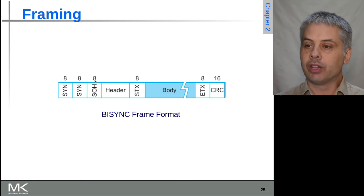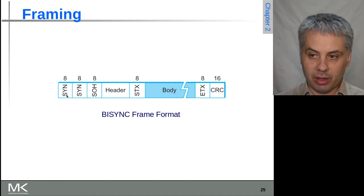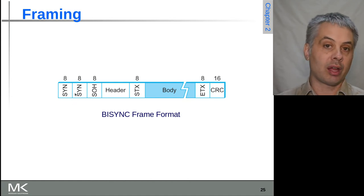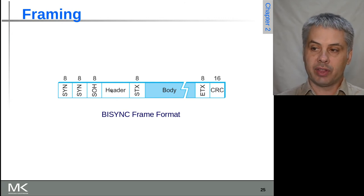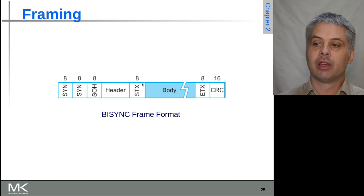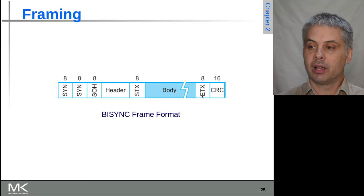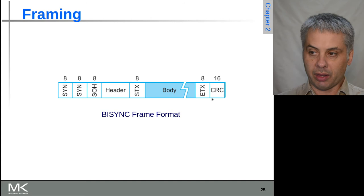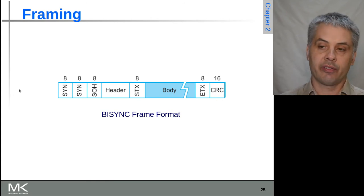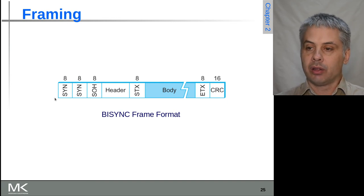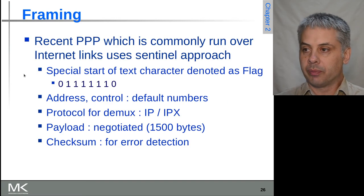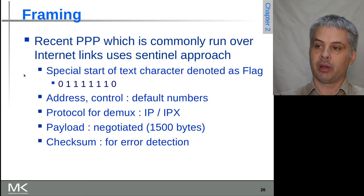So what we end up with for a BISync frame: you've got the sync sync, so you have the multiple syncs in case one of them isn't correctly received, start of header, then the header which might be some fixed or variable length, start of text, the variable length body of the data, then the end of text, and then the CRC markers at the end that include this checksum for the frame. So this can work to solve a bunch of these.